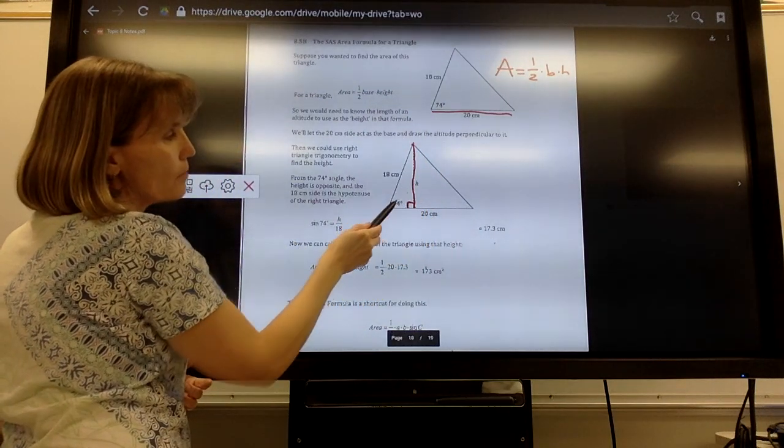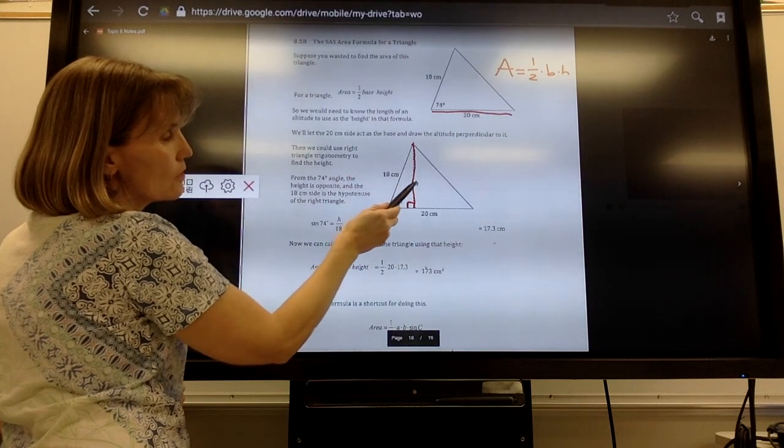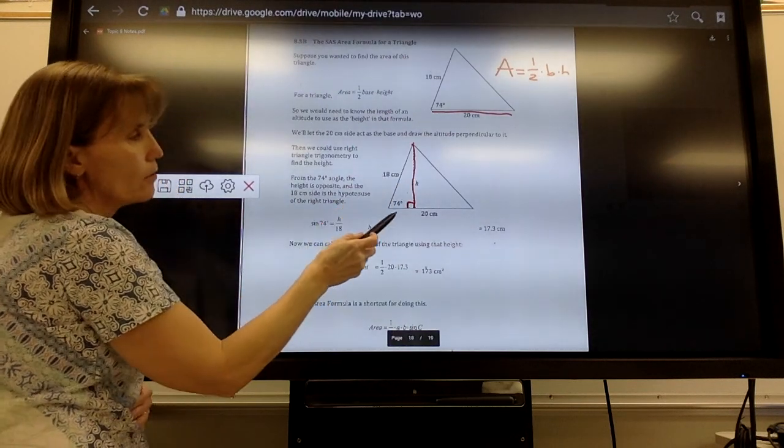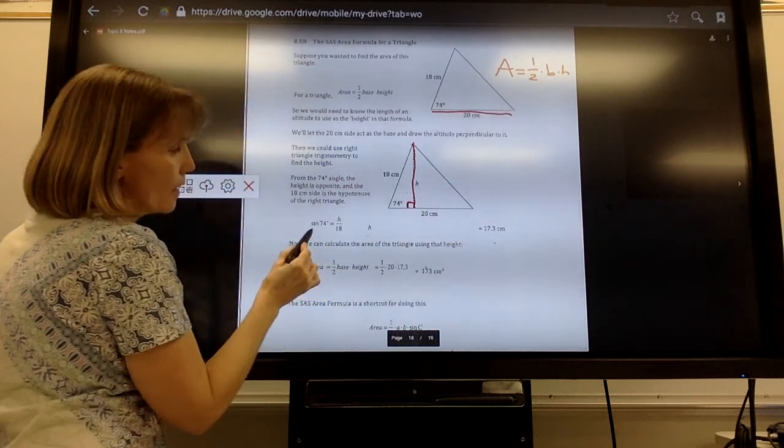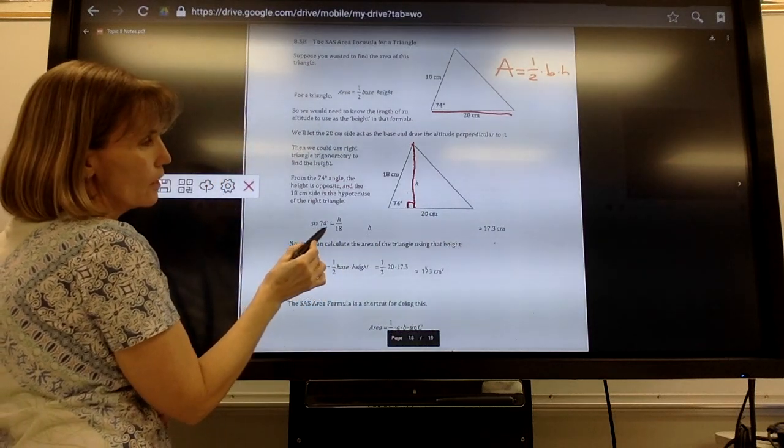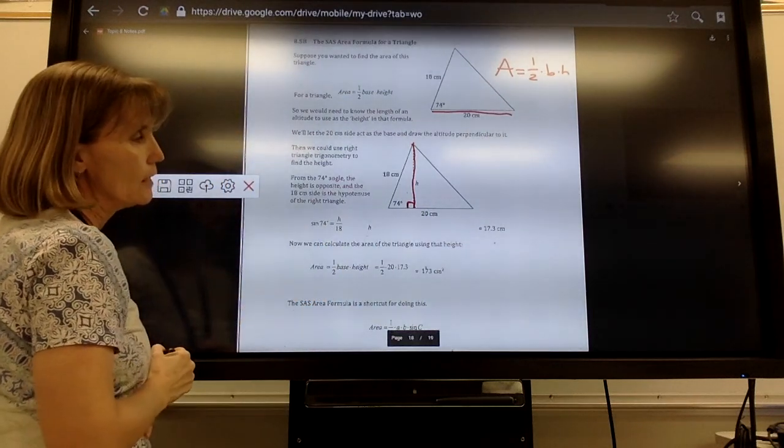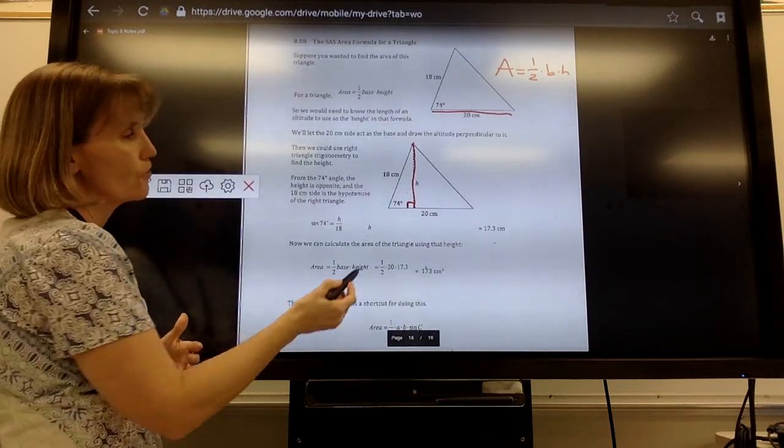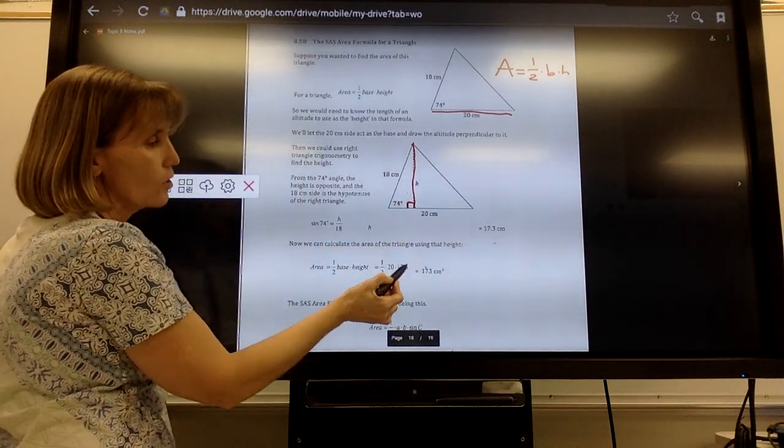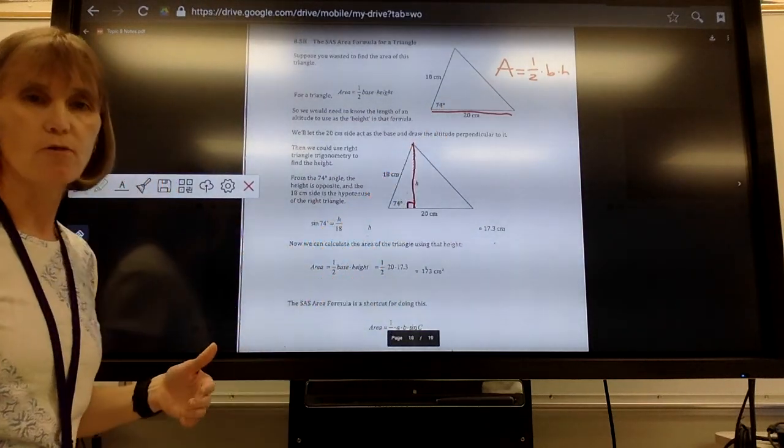H is what I need to know. That's the opposite side of that 74 degrees, and 18 is my hypotenuse. So I could use the sine of 74 degrees is equal to H over 18, and I could solve that to figure out what the height is. And once I knew the height, then I could go back and use my formula.